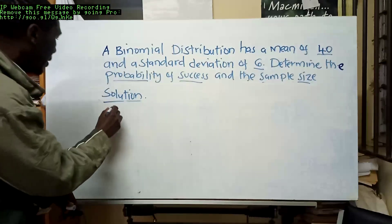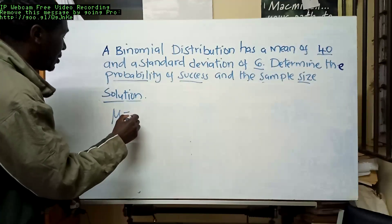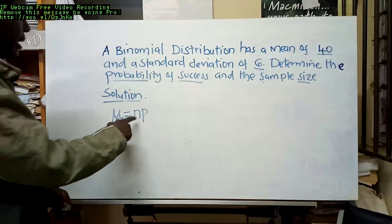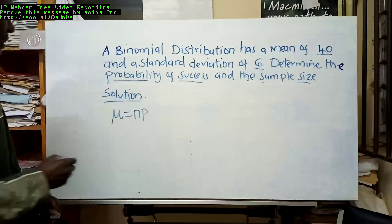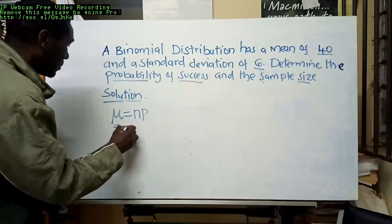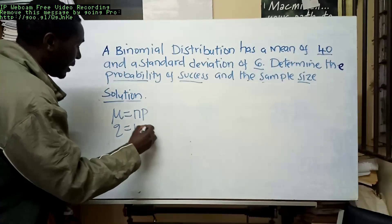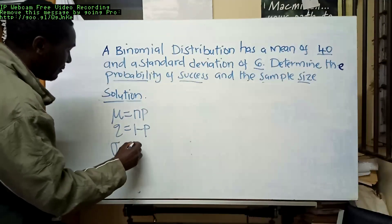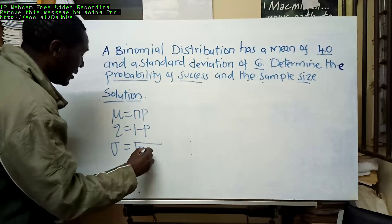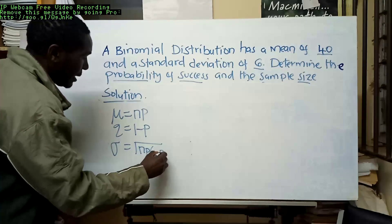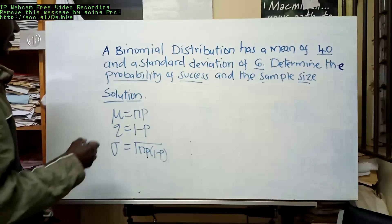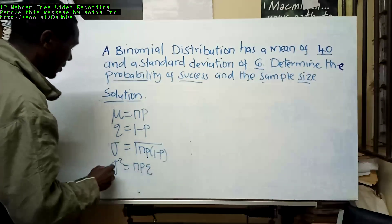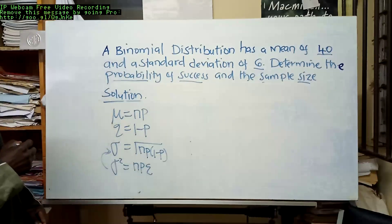We know that binomial distribution mu is equal to np, where mu is the mean, n is the sample size, and p is the probability of success. So q, which is probability of failure, is 1 minus p. And sigma, which is standard deviation, is the square root of n times p times (1 minus p), because variance is equal to n times p times q.